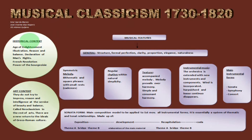There is a historical context. As usual, this was called the Age of Enlightenment, so reason and balance were really important. On these years, the Declaration of Man's Rights took place, and the French Revolution, so the bourgeoisie came to power.